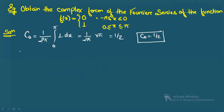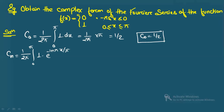Similarly, we calculate cₙ. It is also (1/2π) ∫₀^π f(x) e^(−inπx/l) dx. Since f(x) = 0 from −π to 0, we integrate only from 0 to π. With l = π, the π cancels, giving (1/2π) ∫₀^π e^(−inx) dx.